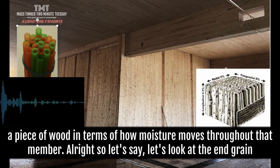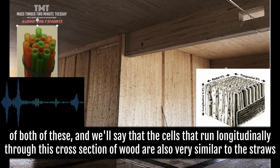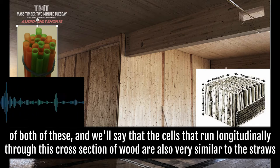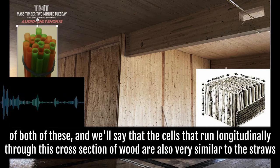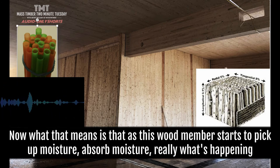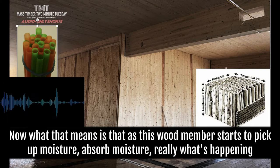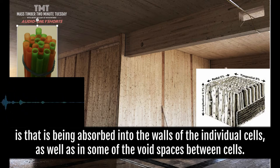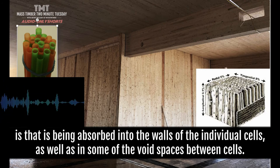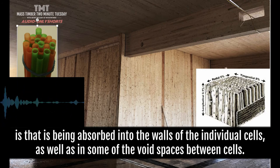Let's look at the end grain of both of these. The cells that run longitudinally throughout this cross-section of wood are very similar to these straws. As this wood member starts to pick up and absorb moisture, what's happening is that moisture is being absorbed into the walls of each of these individual cells, as well as in some of the void spaces between the cells.